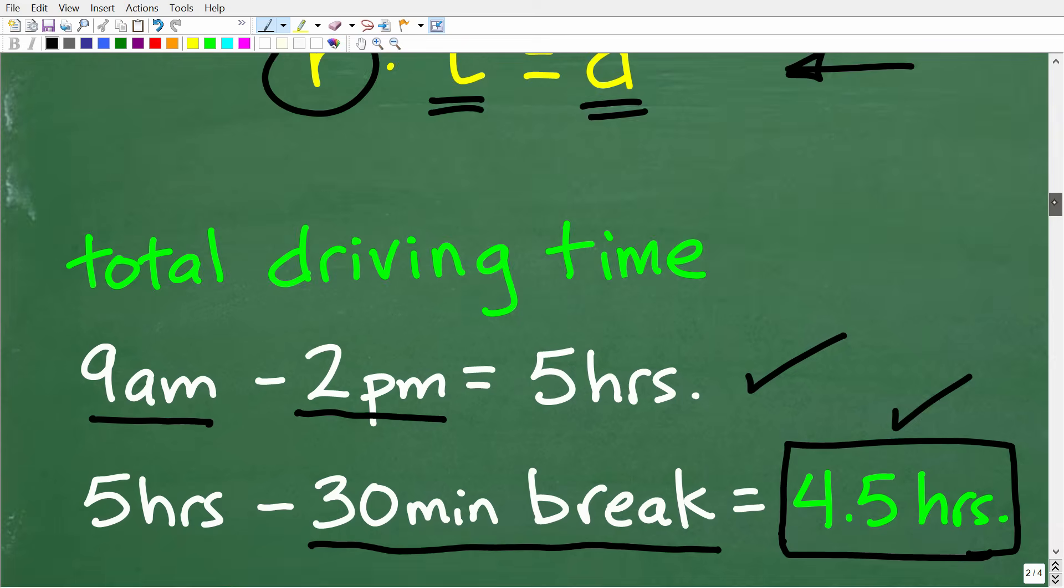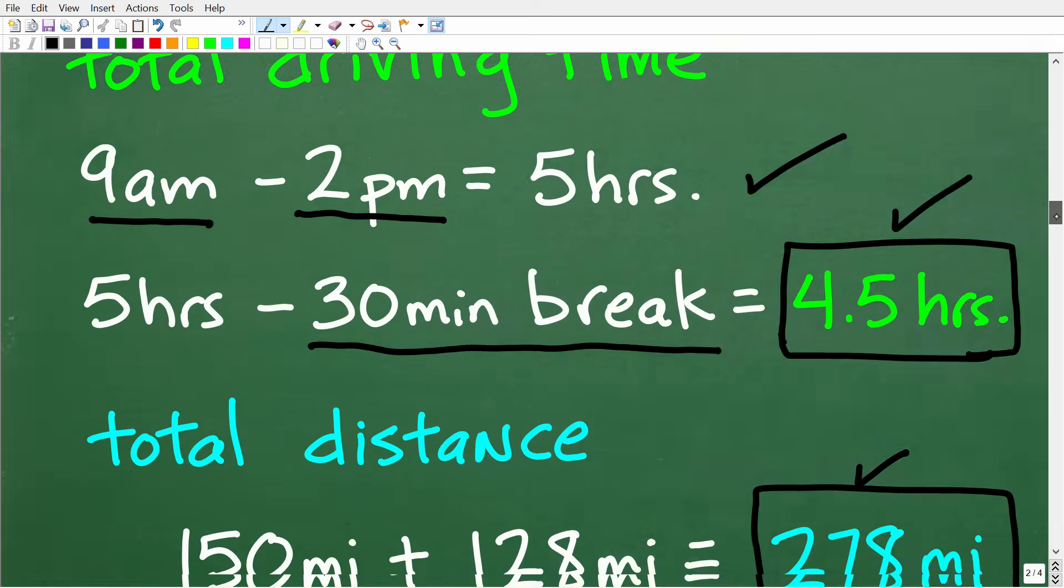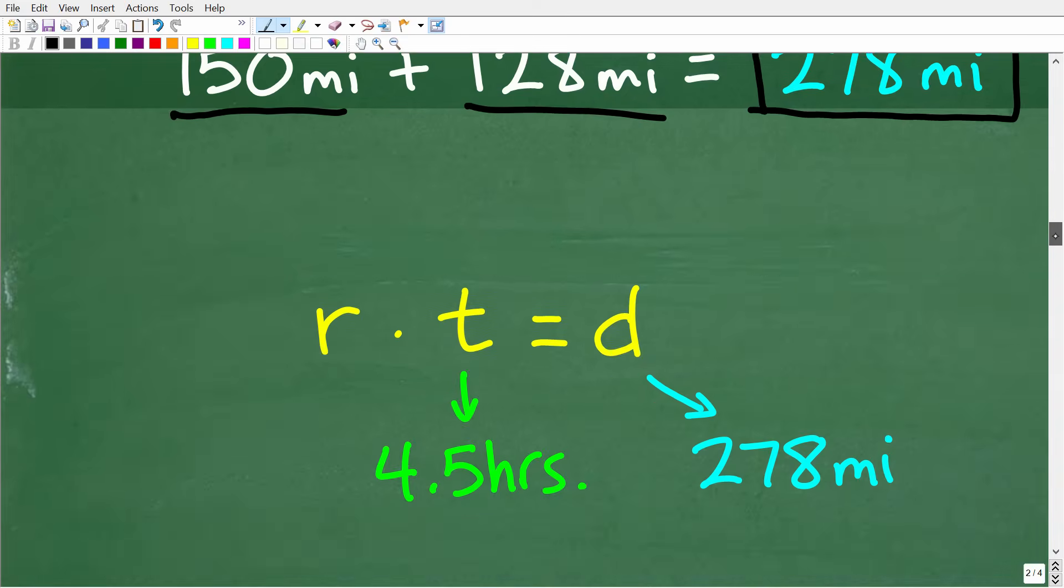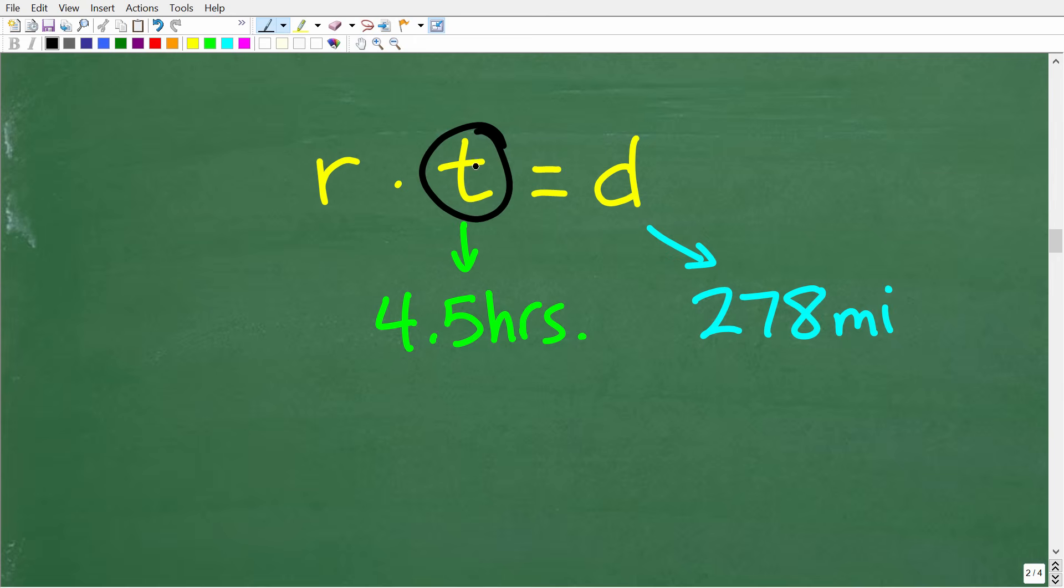What we need to do here is solve for r, which will be the average rate. We're going to plug in our information for t and d and use some simple algebra to solve this equation. So r times t equals d. What is the time? It's 4.5 hours. And what is the distance? That's 278 miles.